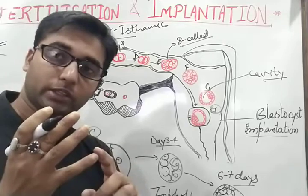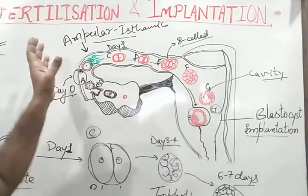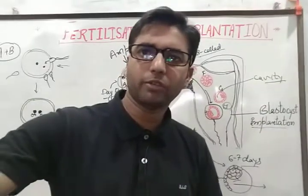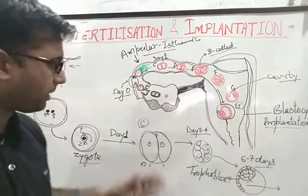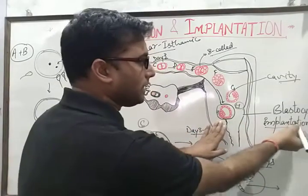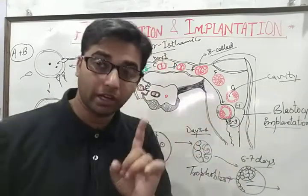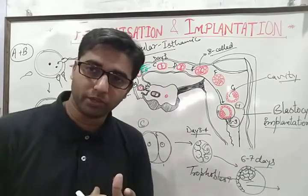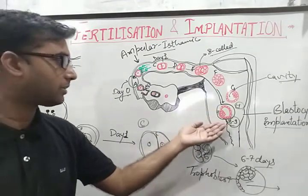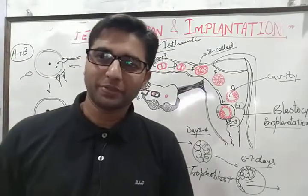Then there are three germ layers that form in embryonic development. So this is the simple structure of fertilization and implantation. If you have any queries, please ask me and I will give you answers. Implantation is about 8 to 9 days from day 0. Day 0 is when the egg is released, and by day 9, implantation is complete. Thank you very much.